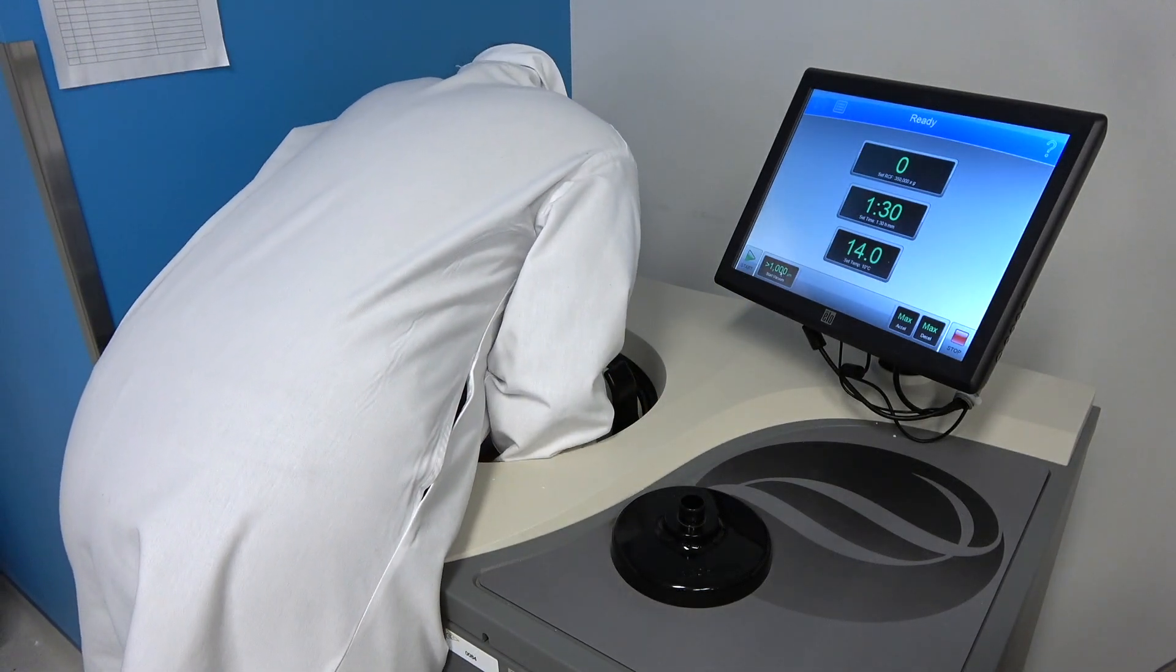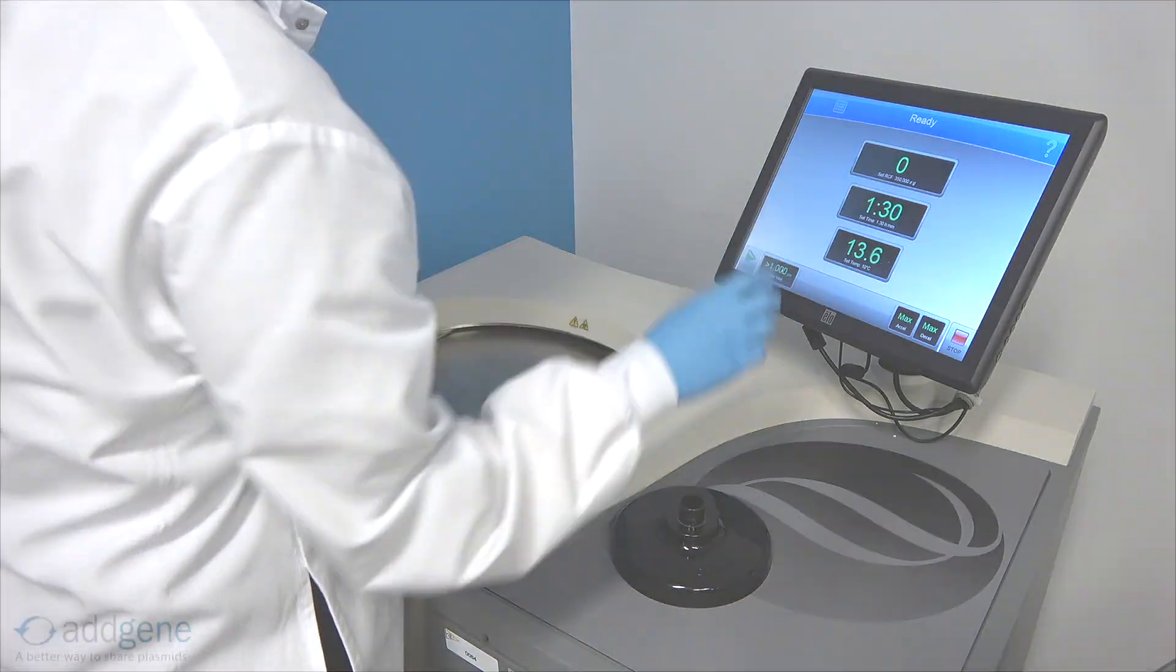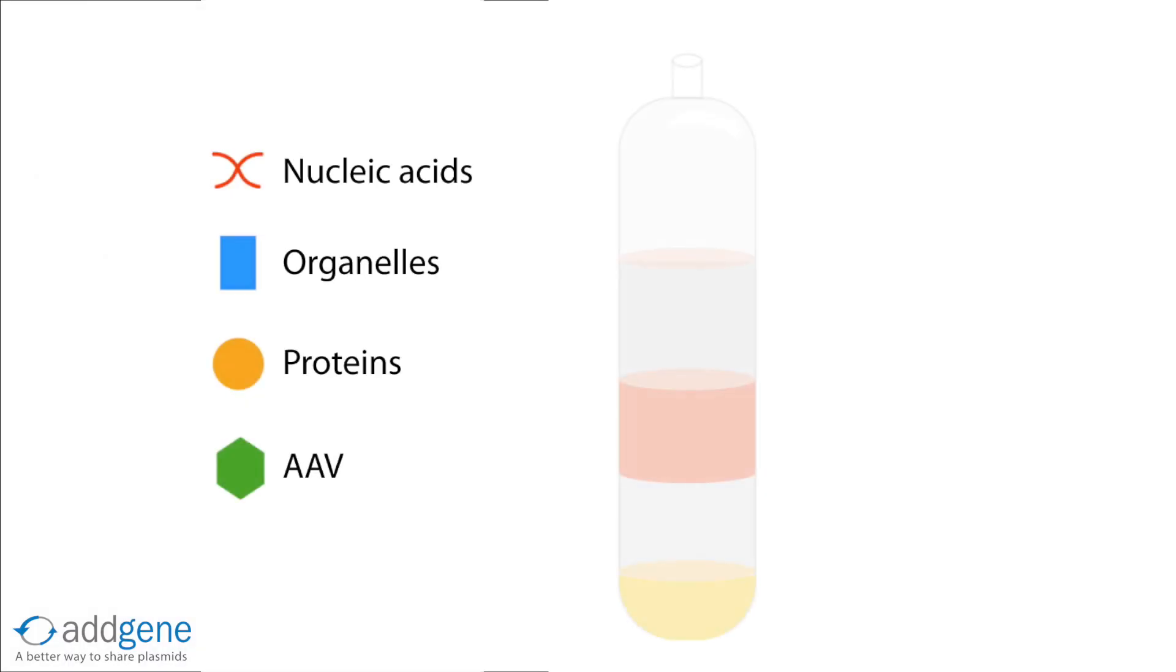At these high speeds, it's necessary to spin in a vacuum to reduce the friction and heat generated. As the column spins, the contents are subjected to centrifugal force.